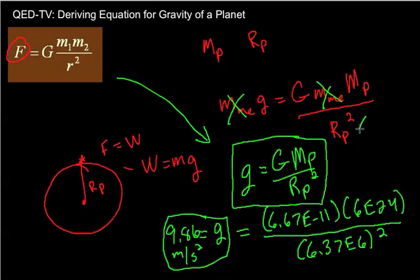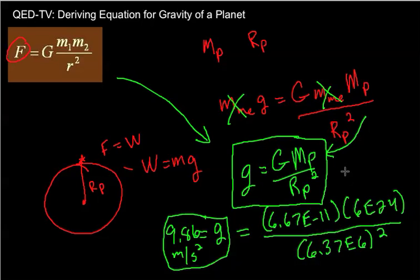A couple of questions to check our understanding. What would happen to the acceleration of gravity for an object on a planet if you triple the planet's mass, keeping the volume — and therefore the radius — the same? If you put a factor of 3 in front of the mass of the planet in the equation, you'll see that the gravity is going to be 3 times as much also.